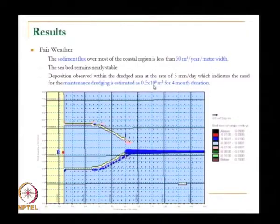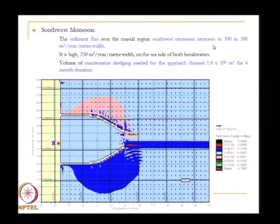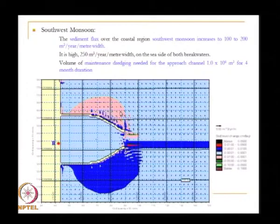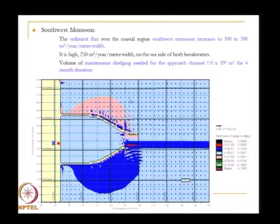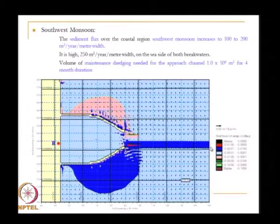The purpose of this sediment transport analysis is to find out how much sediment will be transported and how much will be the siltation. For the southwest monsoon, compared to fair weather, the sediment flux increases from 50 to 100 to 200 cubic meters per year per meter width. On the seaside of both breakwaters — the southern breakwater and northern breakwater — it is about 250 cubic meters. The volume of maintenance dredging is about 1 × 10⁶ cubic meters for about 4 months duration.